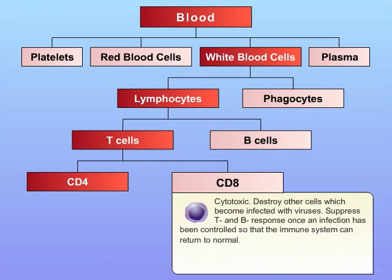The CD8 cells are referred to as cytotoxic T lymphocytes. These are cells that can destroy other cells which become infected by viruses. They can also suppress the T and B cell response once an infection has taken place, so that the immune system can return to normal status.